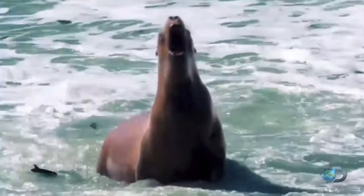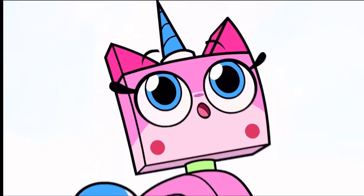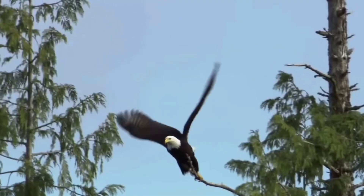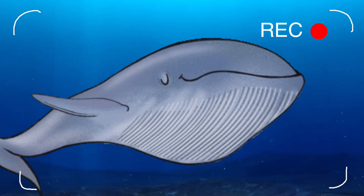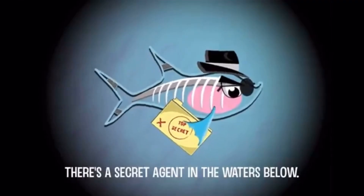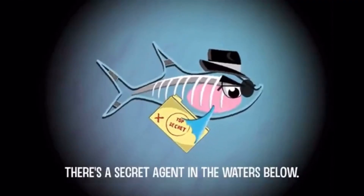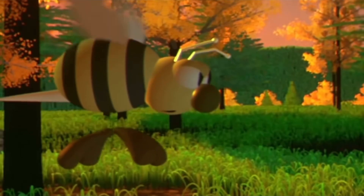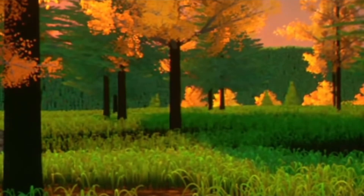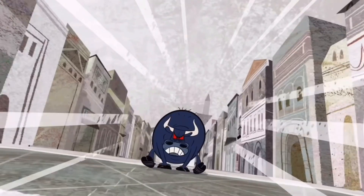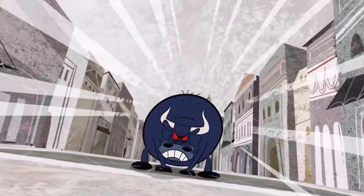S is for Seal, T is for Turtle, U is for Unicorn, V is for Vulture, W is for Whale, X is for X-Ray Fish, Y is for Yellowjacket, and Z is for Zebra.